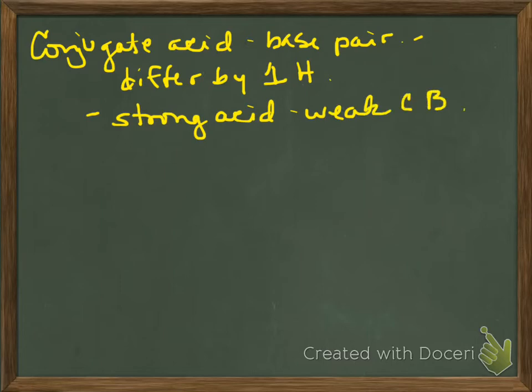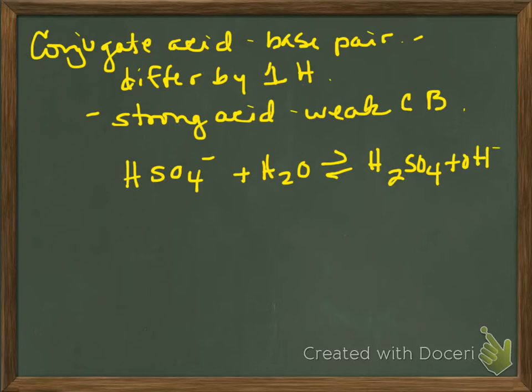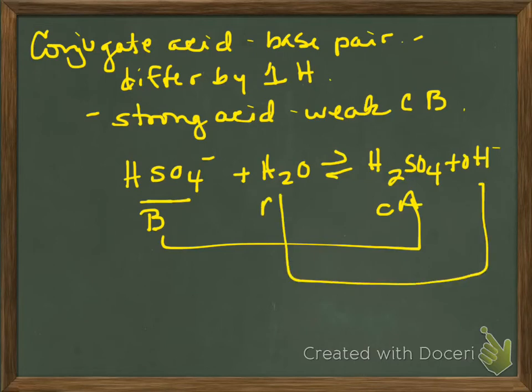And this would be something like if I have HSO4 negative in water, it can set up an equilibrium and form H2SO4 and hydroxide. This first component is acting as a base with its conjugate acid. Water is acting as the acid with its conjugate base being the hydroxide because it's giving up the hydronium ion.